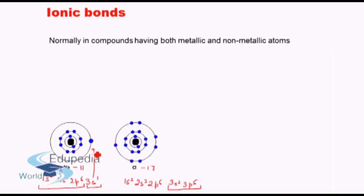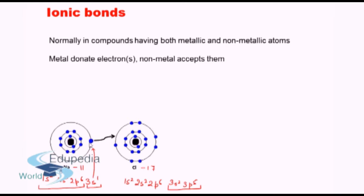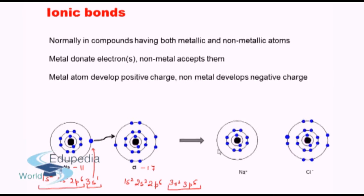How can these two atoms attain stability? If the single electron in the sodium atom is transferred to the outer orbit of the chlorine atom, that gives rise to eight electrons in chlorine's outer shell and a stable configuration is attained. That is exactly what happens — the electron is donated by the metal to the non-metal, giving rise to sodium chloride. Since sodium has lost an electron it becomes singly positively charged, and chlorine having gained an electron becomes singly negatively charged.